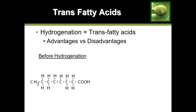The last type of fatty acid to discuss is trans fatty acids. Trans fats are technically a type of unsaturated fat. An unsaturated fat has hydrogens missing and a double bond, and where that double bond is, the structure will bend — creating gaps that make it more susceptible to spoilage through greater oxygen exposure.